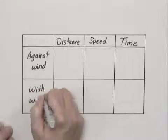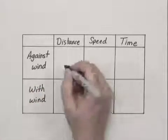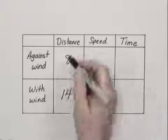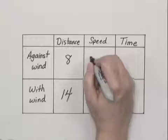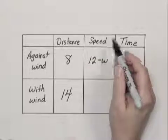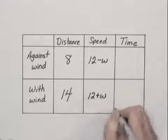And then we fill in everything that we know. I usually start by filling in the numbers that I know. Against the wind, it was 8 miles, with the wind, 14 miles. So the distances I fill in. The speeds we just worked with, we had 12 minus w for the speed or the rate against the wind, and 12 plus w for the speed or the rate with the wind.